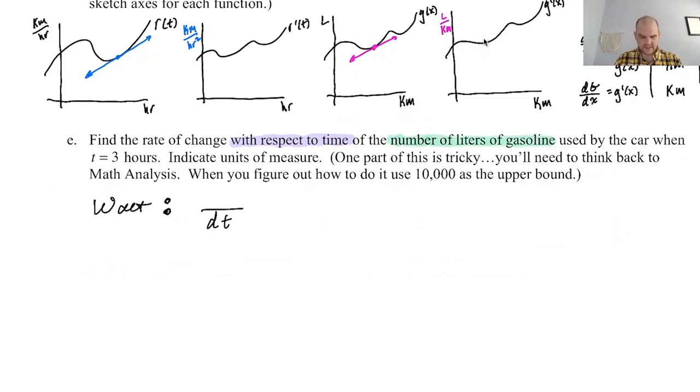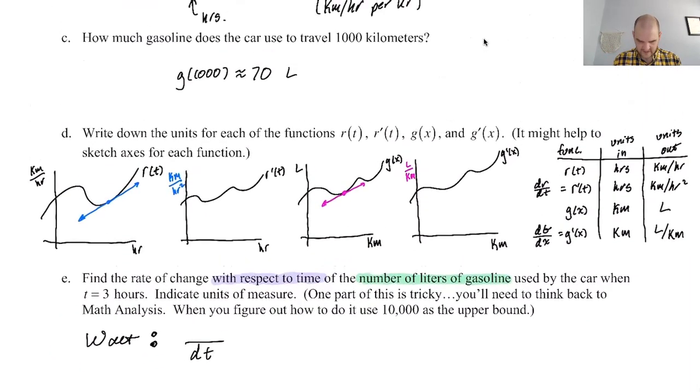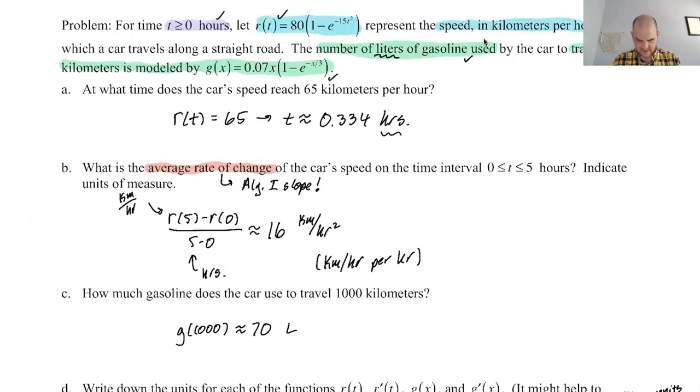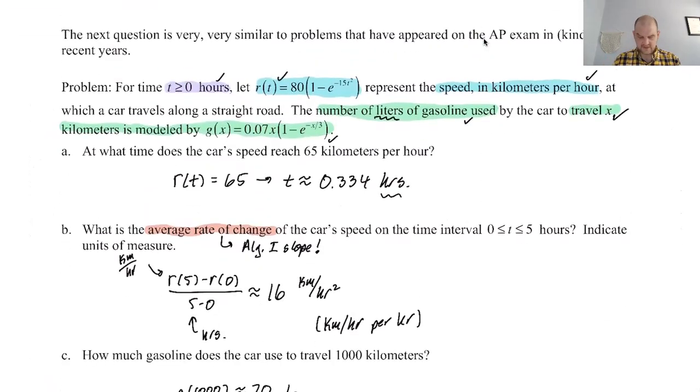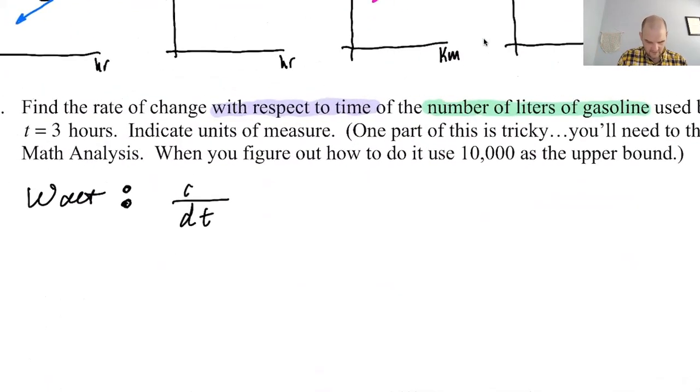So the rate of change of what with respect to time? The rate of change of the number of liters of gasoline. So now we have to figure out what gives us the number of liters of gasoline used by a car. So if we look back at our function, well, our functions, r of t is the speed in kilometers per hour. So that's not it. g of t is the number of liters of gasoline. So we can see there, liters of gasoline used. So g is the liters of gasoline. So we actually are looking for dg dt, the rate of change of g, the number of liters of gasoline, with respect to time.